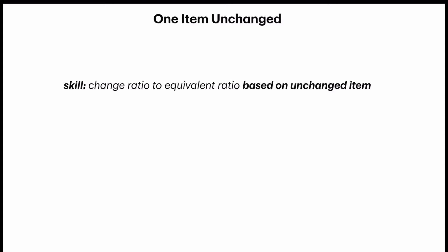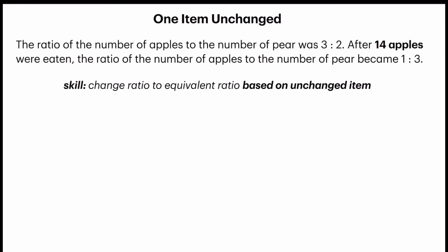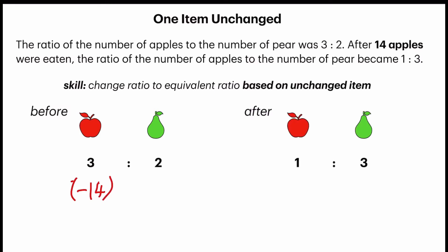Let's look at the example given. The ratio of the number of apples to the number of pears was 3 is to 2 — that's before. But now something happened: 14 apples were eaten, so I'm going to subtract 14 here. Then now, the ratio of the number of apples to the number of pears became 1 is to 3.